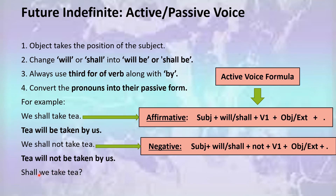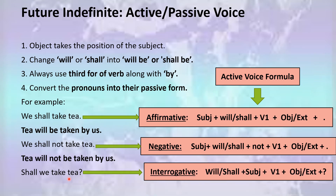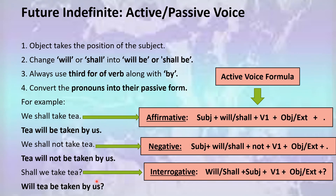Let's look at the next statement, which is the interrogative sentence of future indefinite tense: 'Shall we take T?' I have identified with the help of this formula that this is future indefinite tense in active voice form. I will convert it into its passive voice form like this: 'will' comes at the start because it's an interrogative statement, then you add 'T', then 'be taken' — the third form of the verb — followed by 'by us'. Your sentence becomes: 'Will T be taken by us?'